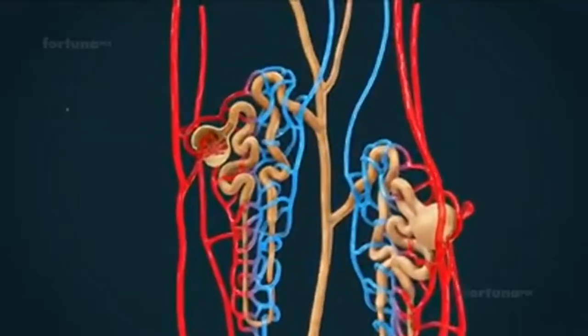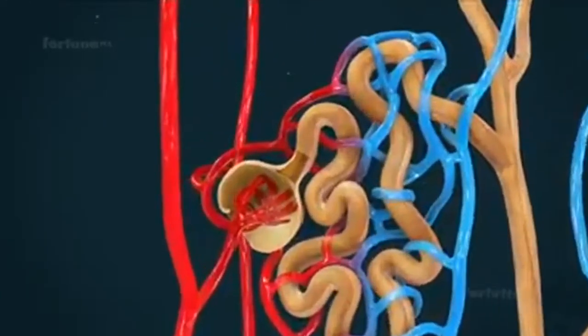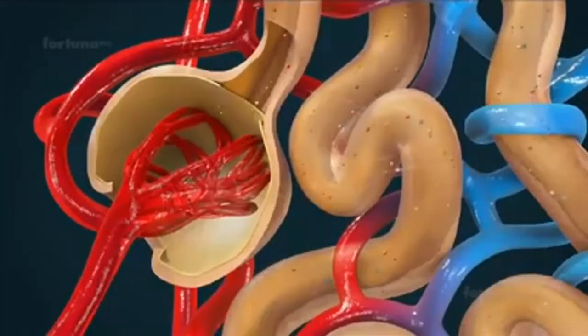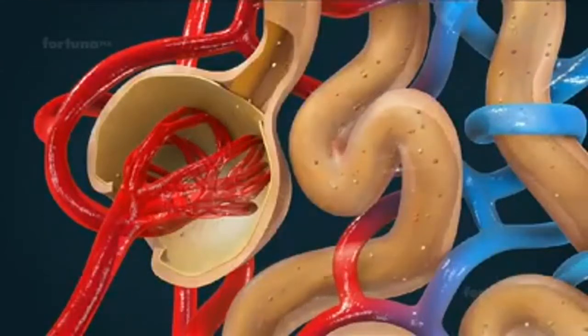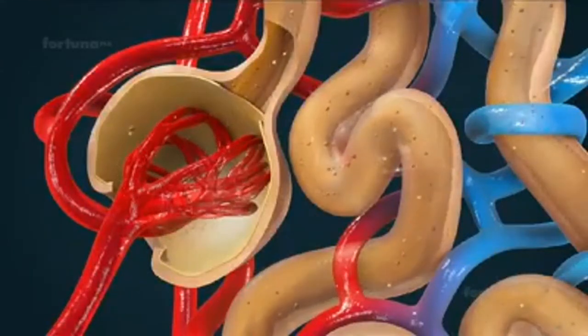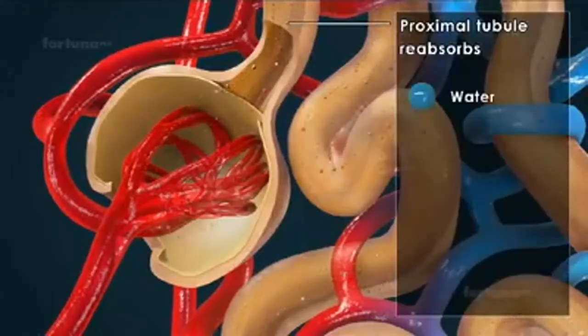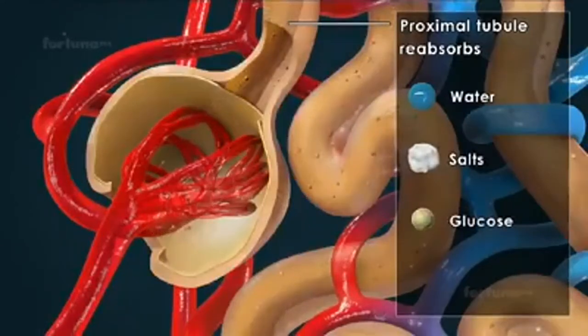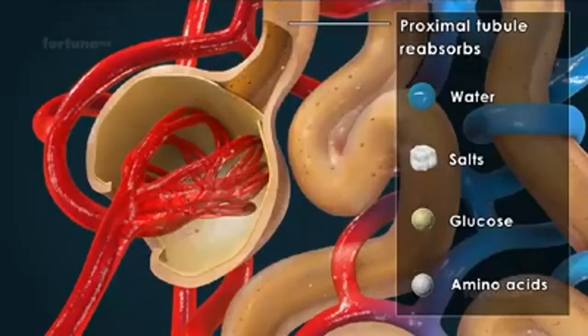In each nephron, blood from the glomerulus filters water and certain dissolved substances into the space of the Bowman's capsule. The filtrate then enters the renal tubules, allowing the proximal tubule to reabsorb water, salts, glucose, and amino acids, which helps to maintain electrolyte levels in the body.